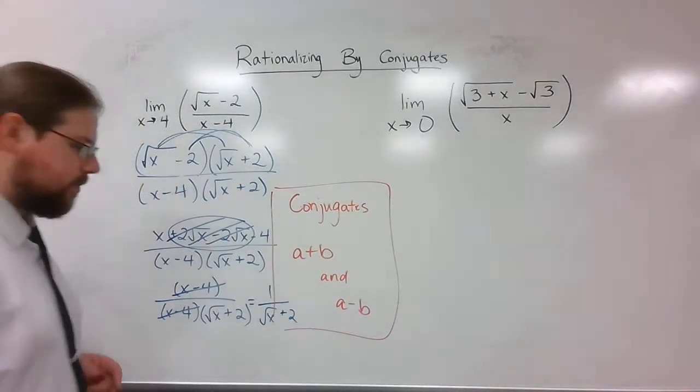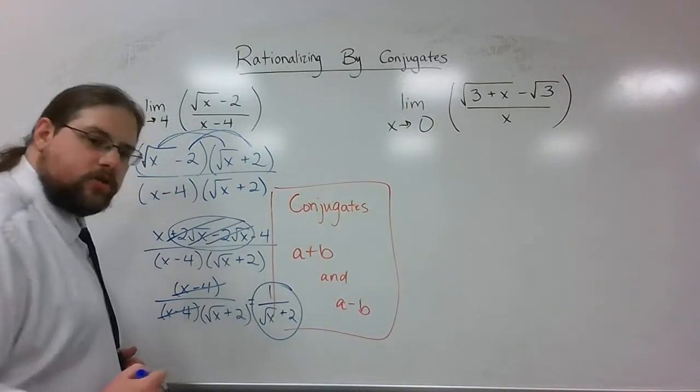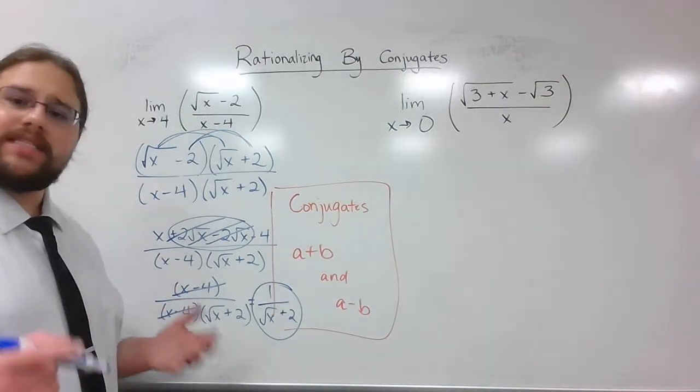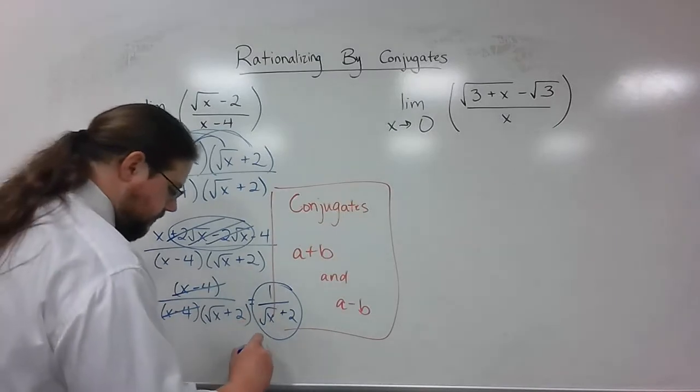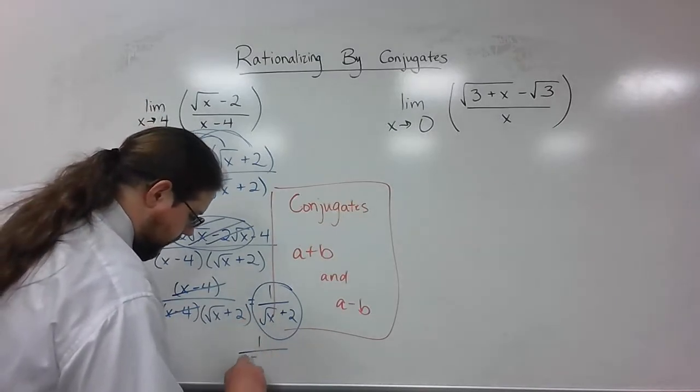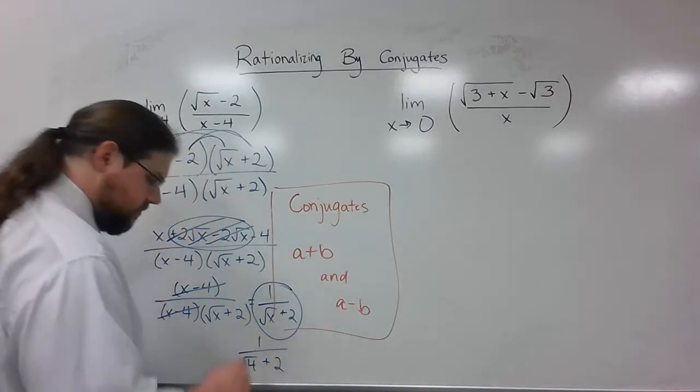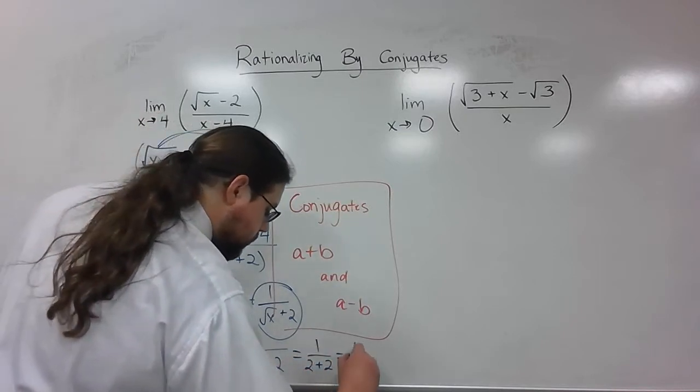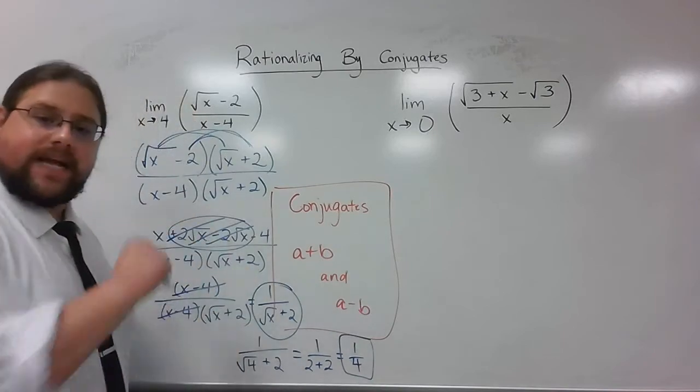So, x minus 4 over x minus 4 leaves me with a 1 on top over the square root of x plus 2. Well, here's the thing. I can determine the limit as this approaches 4. All I have to do is plug in 4 and see what happens. 1 over the square root of 4 plus 2. Square root of 4 is 2. So, 2 plus 2 is 1 over 4. Boom! Done. There's my answer.